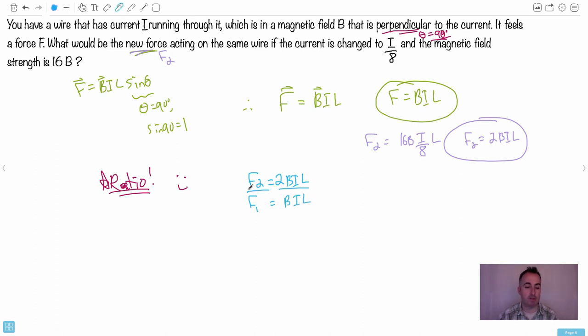The reason I do this is I want F2 as a function of F. I actually don't need to call it F1, I can just call it F. That's what we needed. So can you see that it's really obvious what cancels out? These BILs are here, they cancel out. So can you see I end up with F2 over F equals 2. Therefore, F2 is 2F. So what does that mean? That means making the magnetic field change by 16 times stronger, but at the same time making the current 8 times weaker, will end up still giving you twice the magnetic force.